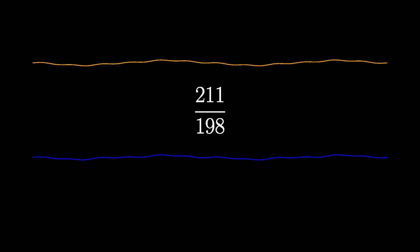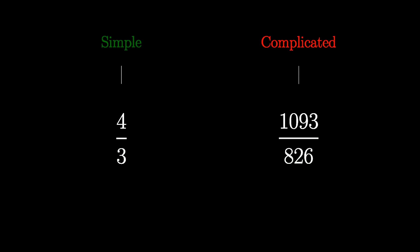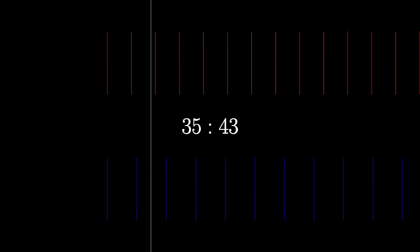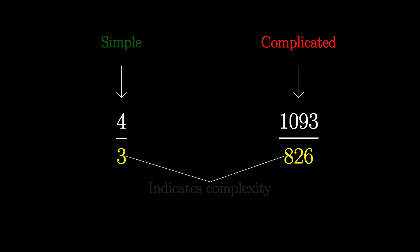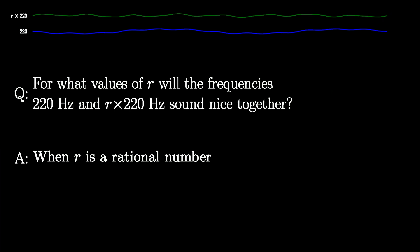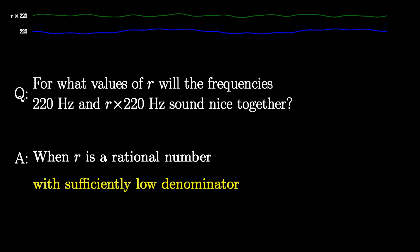However, most rational numbers actually sound pretty bad, like 211 over 198, or 1093 divided by 826. The issue, of course, is that these rational numbers are somehow more complicated than the other ones. Our ears don't pick up on the pattern of the beats. One simple way to measure complexity of rational numbers is to consider the size of the denominator when it's written in reduced form. So we might edit our original answer to only admit fractions with low denominators, say less than 10.